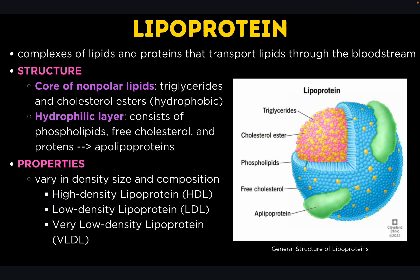Lipoproteins vary in density, size, and composition, which affects their function and role in lipid transport. HDL, or high-density lipoprotein, has high protein content relative to lipids and transports cholesterol from tissues back to the liver — this is called the good cholesterol. LDL, or low-density lipoprotein, is rich in cholesterol and delivers it to cells throughout the body. VLDL, or very low-density lipoprotein, is rich in triglycerides and transports them from the liver and intestine to tissues for energy use or storage.